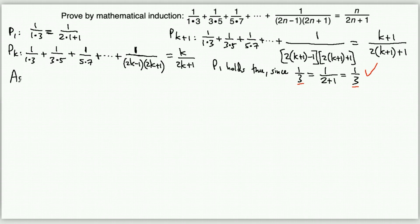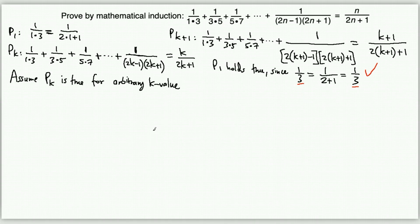Now assume the P(k) statement is true for an arbitrary k value. The k value acts the same way as n — somewhere there will be some arbitrary k for which the sequence stops. We assume this statement is true; we can't prove it, but under that assumption we'll build the P(k+1) statement.